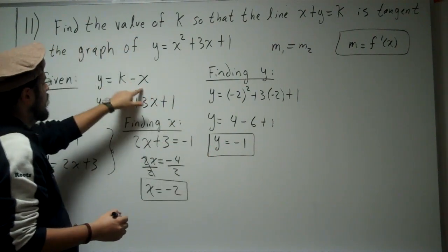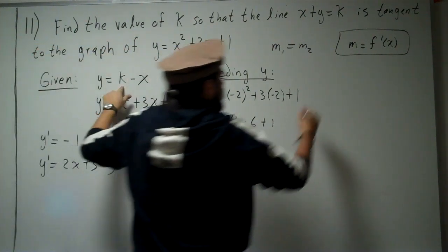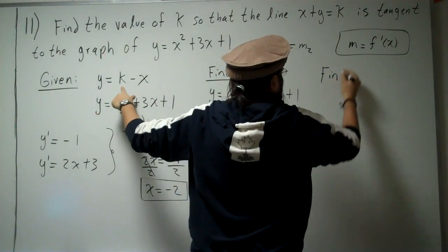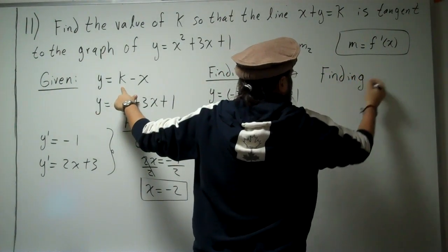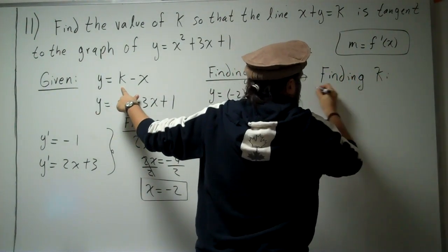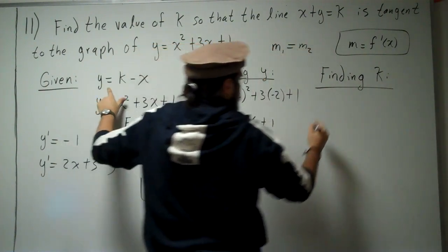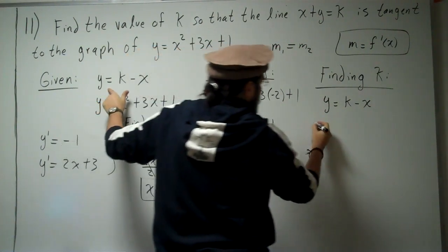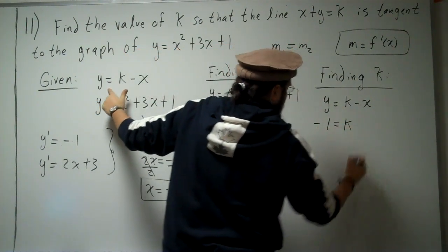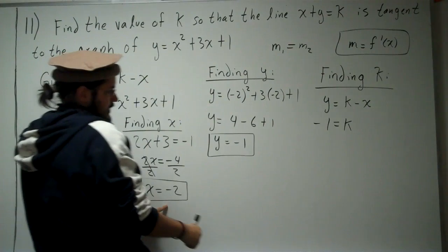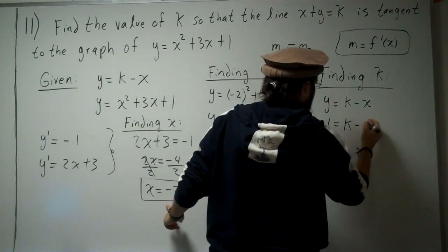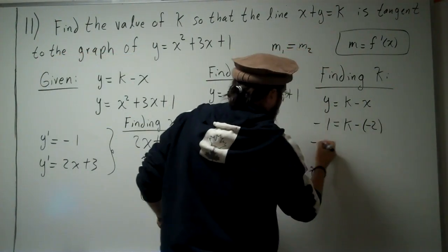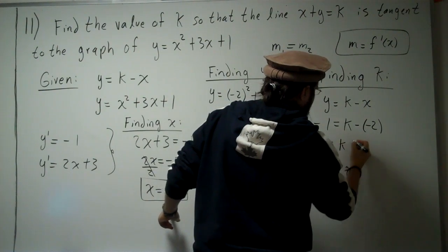Now we can find k. We have y equals k minus x, but y is negative 1 and x is negative 2. So negative 1 equals k minus negative 2. That's negative 1 equals k plus 2.